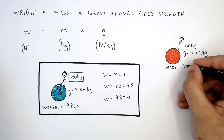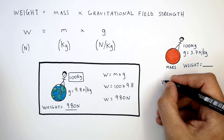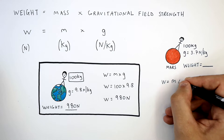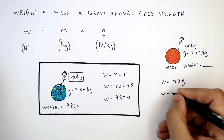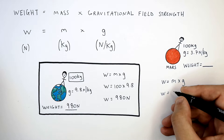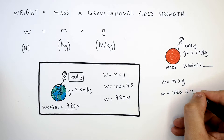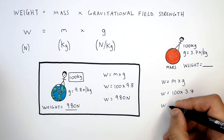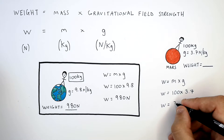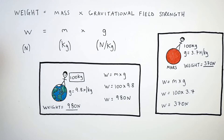So to calculate the person's new weight, you simply use W equals M times G — weight equals mass times gravitational field strength — whereby weight equals 100 kilograms times 3.7 newtons per kilogram, and that gives you a weight of 370 newtons.